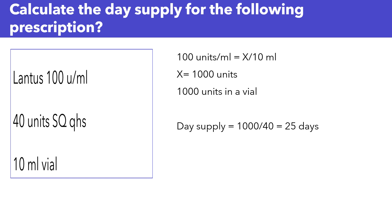100 units per ml equals x over 10 ml. So x equals 100 times 10, which is 1,000 units. So a 10 ml vial has 1,000 units of insulin.